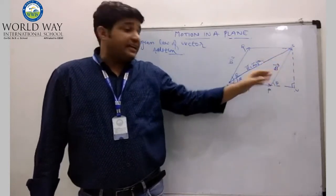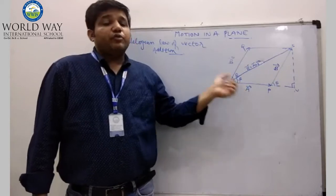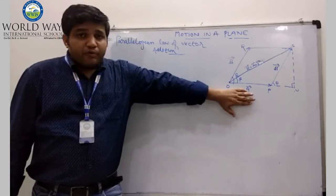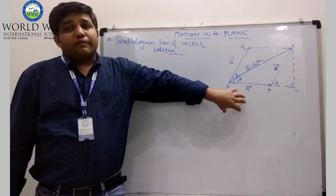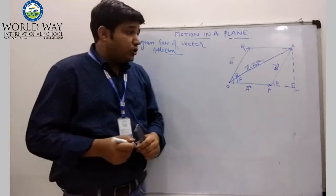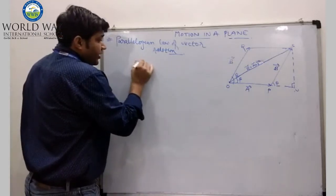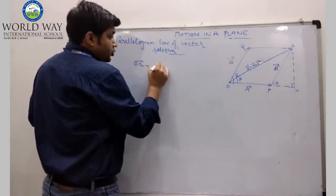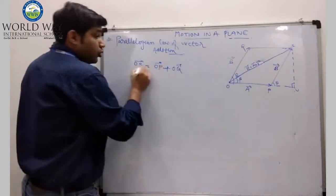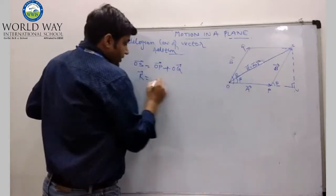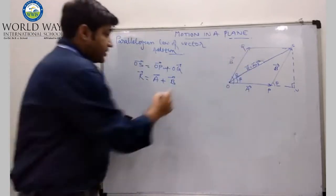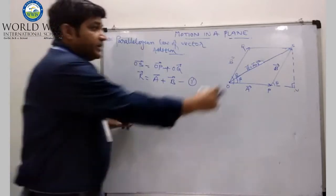In this, the resultant as well as the angle beta — we have to prove the direction of how this vector can be represented. We know the vector has magnitude as well as direction. According to this figure: OS equals OP plus OQ. That is, vector R equals vector A plus vector B. This is equation number 1.